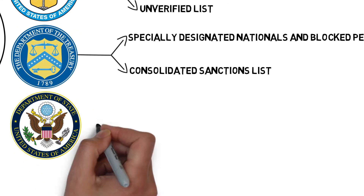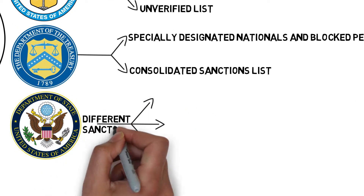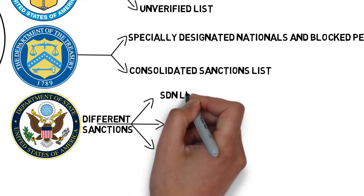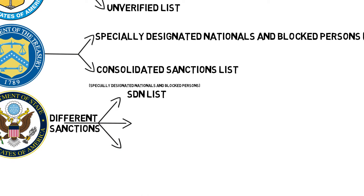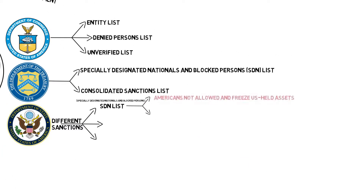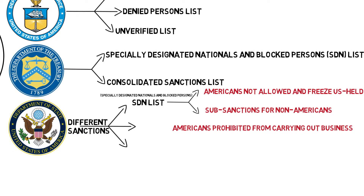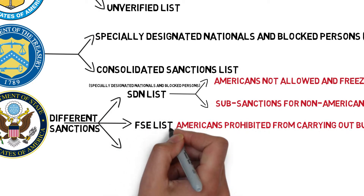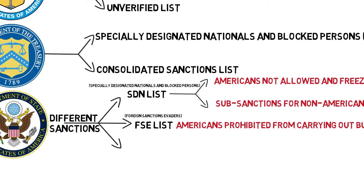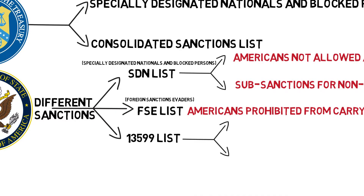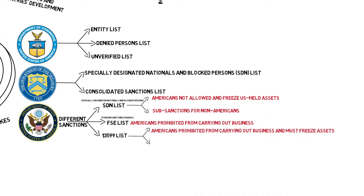The United States government has adopted different sanctions against individuals or entities on each list. For individuals or entities on the SDN list, Americans are not allowed to do any business with them without permission and must freeze their U.S.-held assets. The U.S. government has also imposed secondary sanctions on non-Americans carrying out operations related to Iranian individuals or entities on the SDN list. According to specific legislation, Americans are prohibited from doing business with individuals or entities on the FSE list without permission, but there is no need to freeze their assets. For Iranian individuals and entities on the Executive Order 13599 list, Americans are not allowed to do any business without permission and must freeze their assets. However, the U.S. does not impose secondary sanctions on non-Americans conducting operations related to entities on the 13599 list.